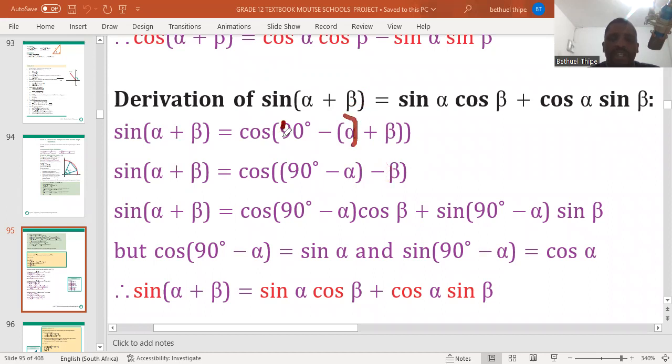After that, we group this together. As we can see here, they are grouped. Then we treat this as one angle. Call it angle A. Then call this one angle B.